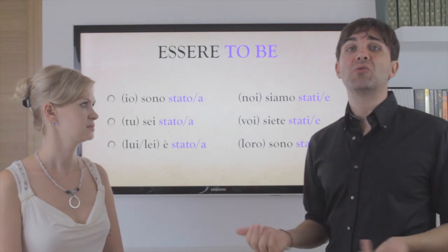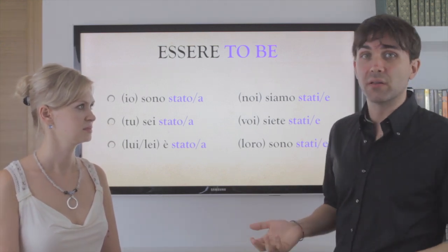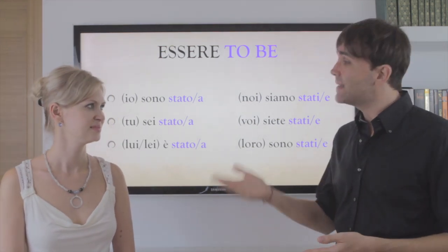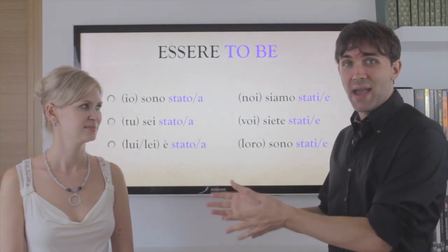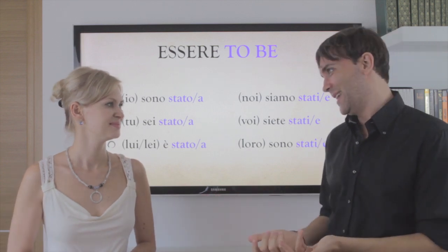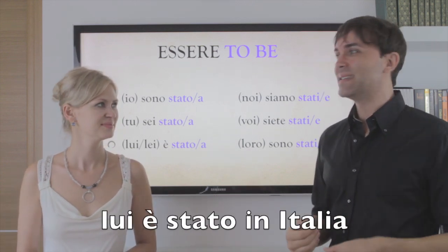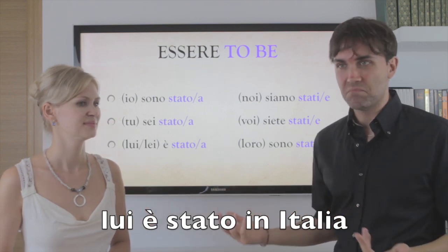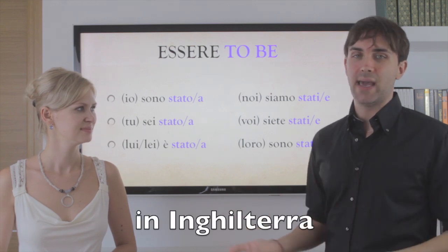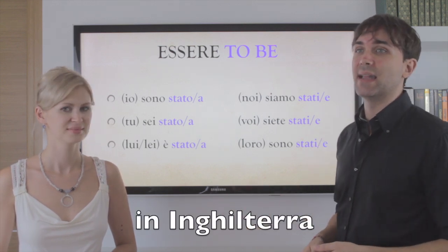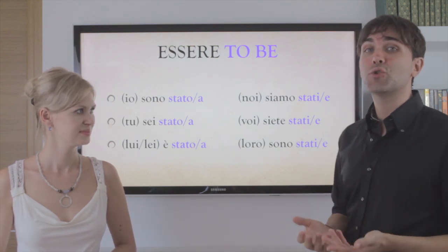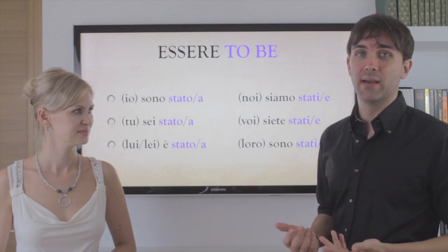For example: io sono stato bravo — I've been good. Tu sei stata cattiva, Marina — you've been bad. Lui/lei è stato in Italia. Noi siamo stati in Inghilterra — we've been in England. Voi siete stati al mare — at the sea. Loro sono stati in montagna — at the mountain.